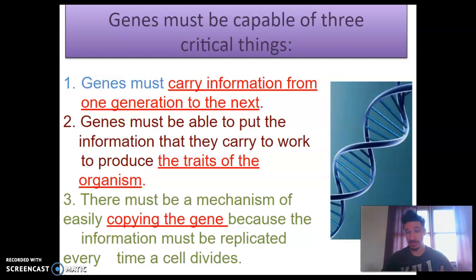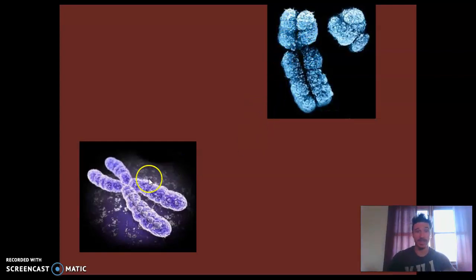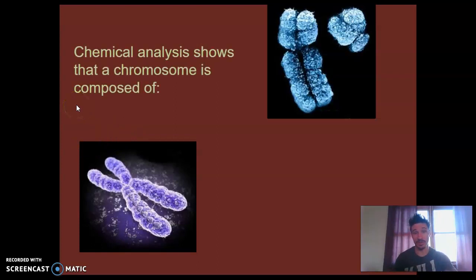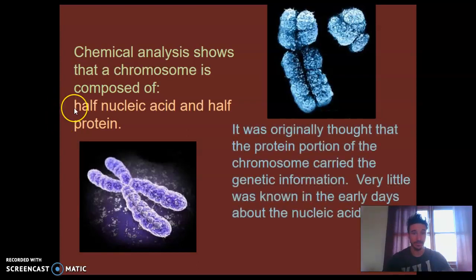We assumed there had to be a really consistent, reliable mechanism for that copying, at least, because life is so prevalent on Earth. On the screen here you see a couple of chromosomes — these are actual chromosomes taken with electron microscopy, and this is just an artist's illustration. Fun fact: these are actually the sex chromosomes — this is the X chromosome, and this is the Y chromosome. A chemical analysis of a chromosome shows that it's actually composed of half nucleic acid and half proteins, which is a little odd. It turns out chromosomes are not just DNA, but also have some proteins built in. And it was originally thought that the protein portion of a chromosome is what carried the genetic information.